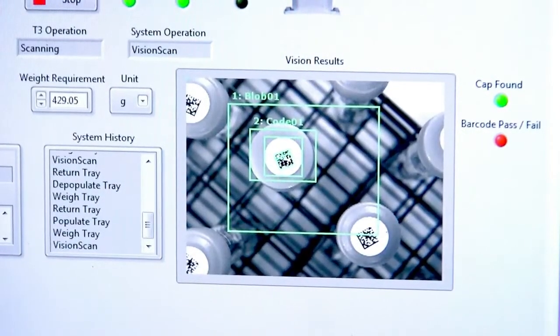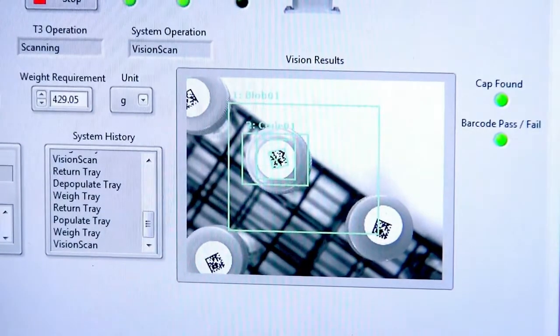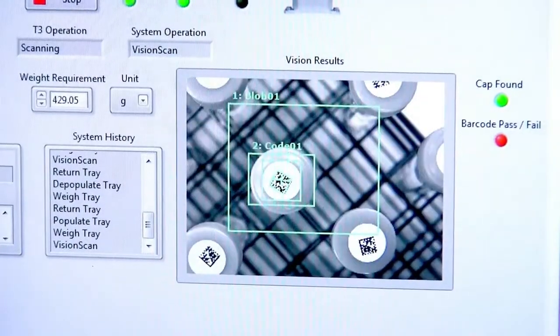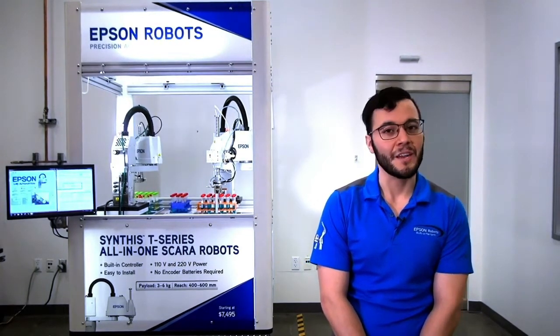The vision system is inspecting test tube caps, reading data matrix codes on the caps, and determining which tubes are good to pick. Once it finds tubes that are good to pick, it uses vision guidance to tell the robot where to go to pick the test tubes without having the gripper collide onto the head of the tubes.